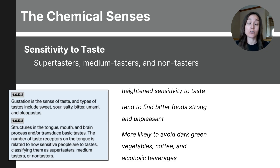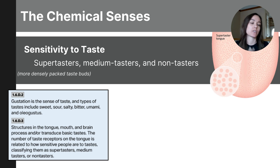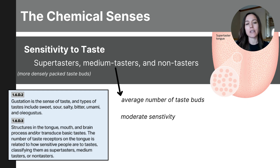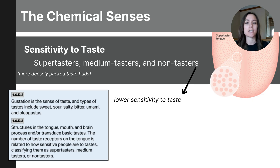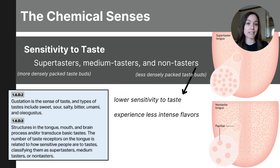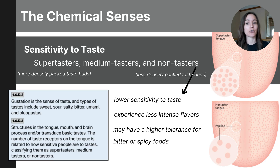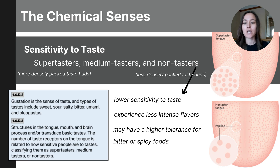This heightened sensitivity is due to the number of taste buds on the tongue. Medium tasters have an average number of taste buds and moderate sensitivity; they fall between supertasters and non-tasters in their ability to perceive flavors. They can enjoy a wide range of foods without the extreme sensitivity that supertasters have. Non-tasters have a lower sensitivity to taste due to having fewer taste buds. They experience flavors with less intensity, often finding certain foods bland. They can even tolerate raw kale or strong black coffee without finding it overly bitter.